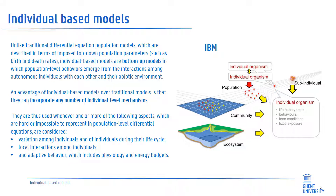Unlike traditional differential equation population models, which are always described in terms of imposed top-down population parameters, individual-based models are bottom-up models in which population-level behaviors emerge from the interactions among individuals with each other and their abiotic environment. An advantage of individual-based models is that they can incorporate any number of individual-level mechanisms. They are used when variation among individuals, local interactions among individuals, or adaptive behavior — including physiology and energy budgets — are considered.